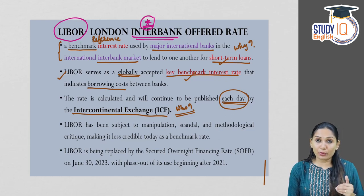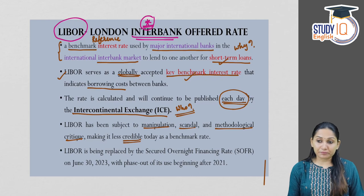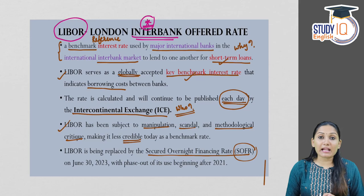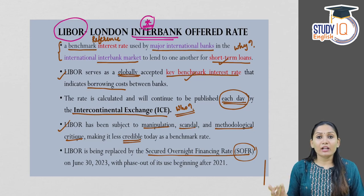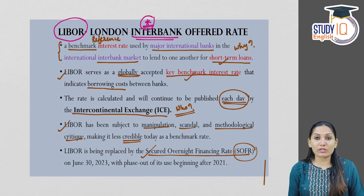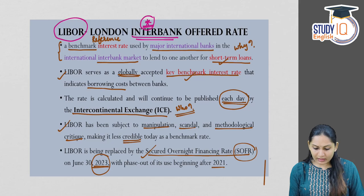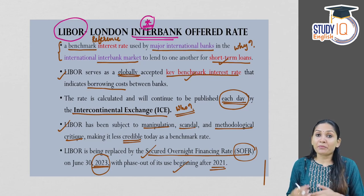In recent years, LIBOR has been subject to various criticisms — manipulation, scandal, and methodological problems — which has made it a less credible benchmark interest rate. This has led to LIBOR being replaced by the Secured Overnight Financing Rate, or SOFR. The USA has already dropped out from the LIBOR mechanism. LIBOR has been phasing out since 2021 in different phases, and SOFR will fully replace LIBOR from June 30th, 2023.